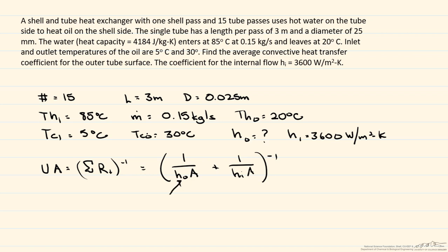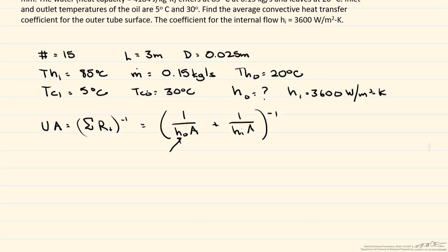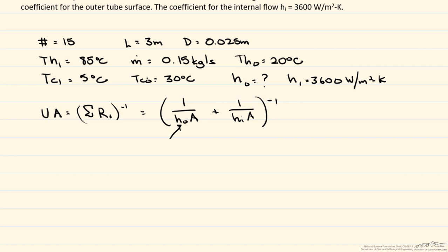So we're gonna use the NTU effectiveness method because by definition, the NTU, which is the number of transfer units, is equal to UA, which is what we're looking for, divided by the minimum heat capacity rate.